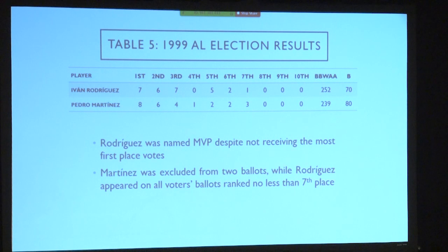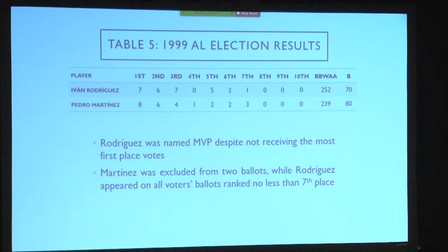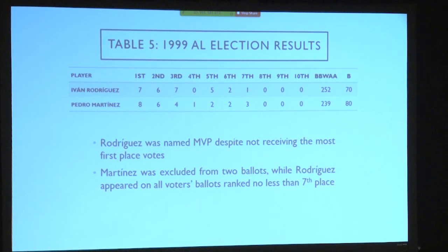This is the 1999 AL election, and it's really interesting because the one named MVP under the official scheme did not get the most first-place votes. Ivan Rodriguez got only seven first-place votes and Pedro Martinez got eight. So if they had used a plurality — just asking who's number one — then Martinez would have won over Rodriguez. This is another example of how the five-point gap doesn't guarantee anything. First-place votes are extremely important, but even getting the most first-place votes doesn't determine the outcome. Martinez was excluded from two people's ballots — whether that's tanking or they genuinely thought he was overvalued, we can't know. But if Martinez had been included on those two ballots at seventh place or higher, he could have overtaken Rodriguez.